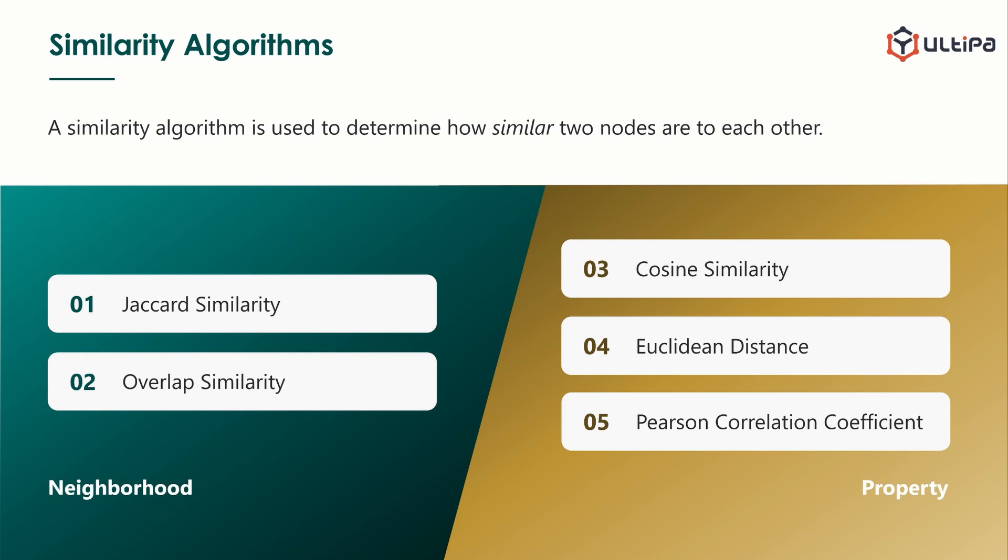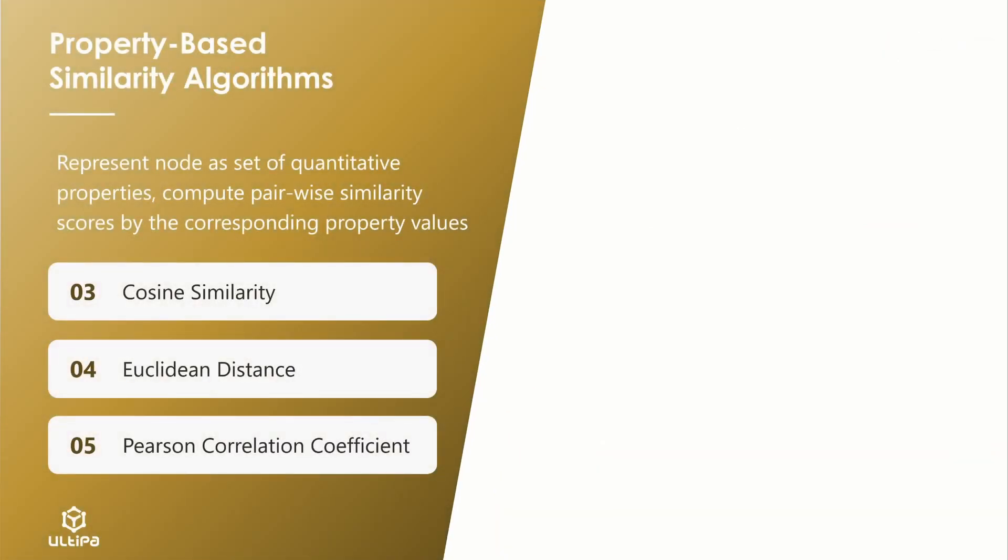In this video, we will dive into the other three similarity algorithms that rely on node properties. In property-based similarity algorithms, node is represented as a set of quantitative properties. The similarity scores are computed by the corresponding property values. Three representatives are cosine similarity, Euclidean distance, and Pearson correlation coefficient. We will consider the similarity between user A and B based on their ratings for five movies. The rating for each movie is stored in the property of the user node. Each user can be represented by the values of these five properties.